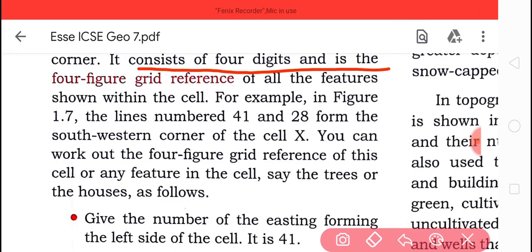That means the grid consists of four figures of all the features shown in the cell. For example, in Figure 1.7, the lines are numbered 41 and 28 from the southwestern corner. You can work out the four-figure grid reference of the cell or any feature in the cell, say the tree or the houses, as follows.